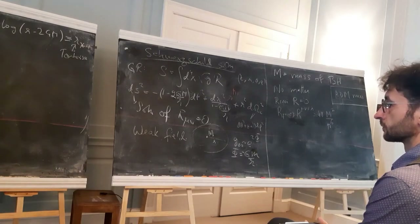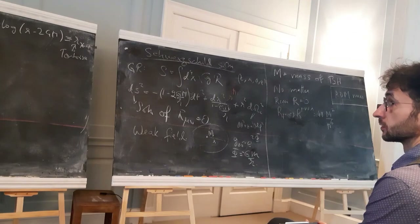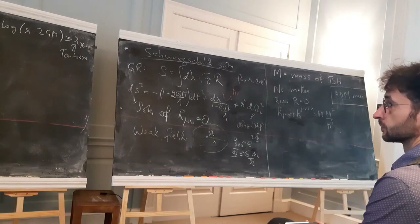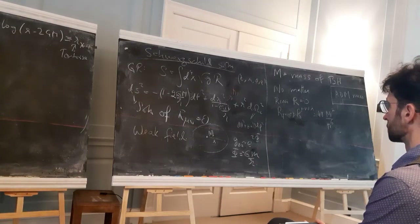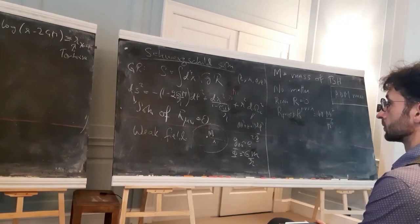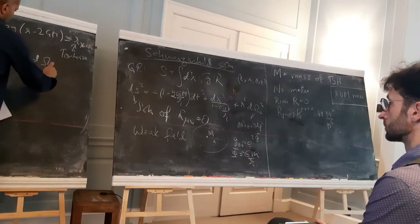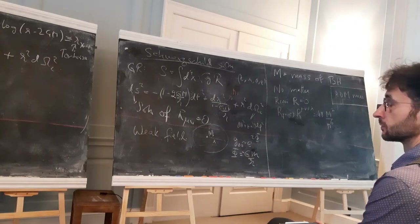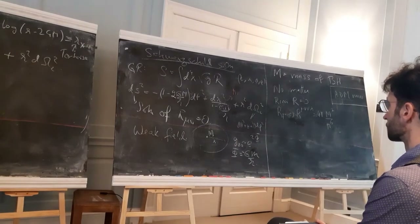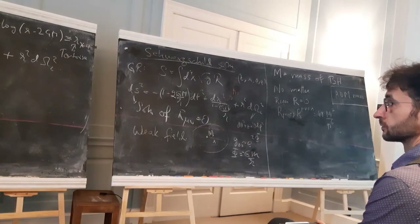Using the advanced Eddington-Finkelstein coordinate v = t + r*, the metric becomes ds² = −(1 − 2GM/r)dv² + 2 dv dr + r² dΩ₂². In these coordinates, there is no singularity at r = 2GM — the coefficient of dv² is zero there, but the metric is otherwise well-behaved. These coordinates allow us to understand the causal structure near the horizon.